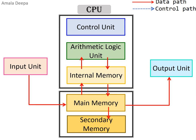Secondary memory is non-volatile — it stores contents permanently even when the computer is switched off. We can load programs and data from secondary memory into main memory whenever needed. The control unit controls the entire operations of a computer, sending signals to all other units whenever their action is needed.